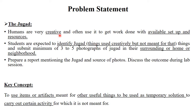Humans are very creative and often get work done with available setup and resources. So in this assignment, students are expected to identify Jugaad — things used creatively but not meant for that. You need to identify those types of things and submit a minimum of three to five photographs of Jugaad in your surrounding, home, or neighborhood. You need to prepare a report mentioning the Jugaad and the source of photos, and discuss the outcome during the lab session.